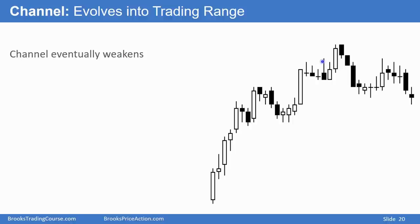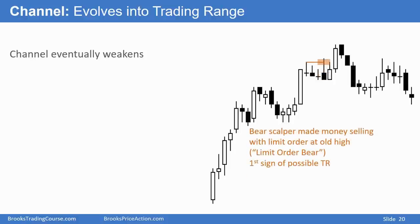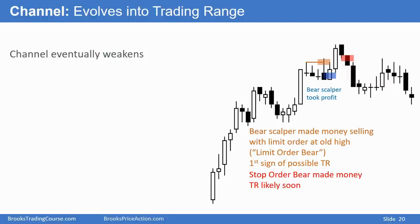Here I know we're clearly in a bull trend — strong bull breakout — and now we're in a channel. I know channels usually evolve into trading ranges. And one of the signs that it is evolving into a trading range is that bear scalpers are making money selling at the prior high. So I pay attention: are the bears making money? First you get limit order bears selling at the prior high and the market falls enough for a scalp. And then stop order bears. Once the stop order bears begin to make money, chances are we're in the early phases of a trading range.